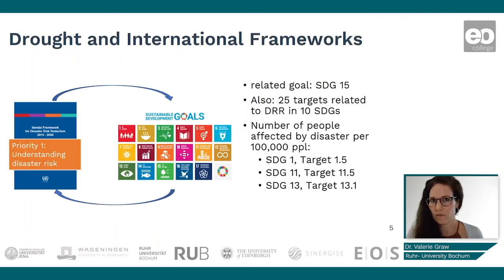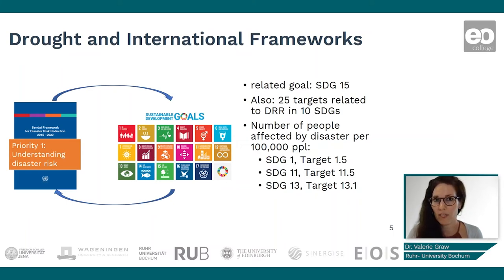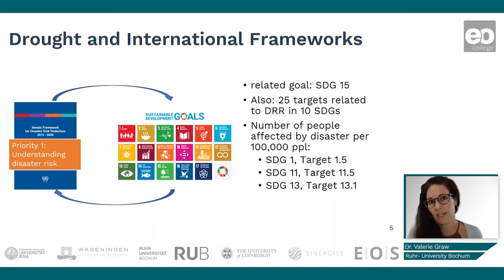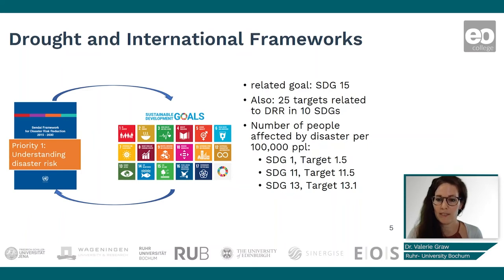Looking at drought in international frameworks: there is the Sendai Framework for Disaster Risk Reduction, where drought is something that can lead to a disaster, and priority one is understanding risk. There are also close links to the Sustainable Development Goals and Agenda 2030 — it's related to life on land, SDG 15, and 25 targets are related to disaster risk reduction across 10 of the SDGs. The indicator of number of people affected by a disaster per 100,000 people appears in three SDG targets.